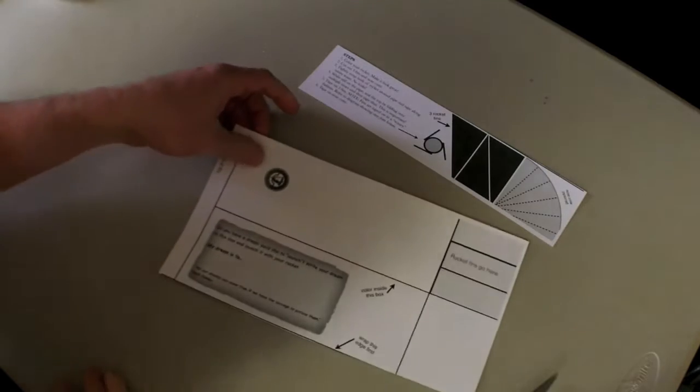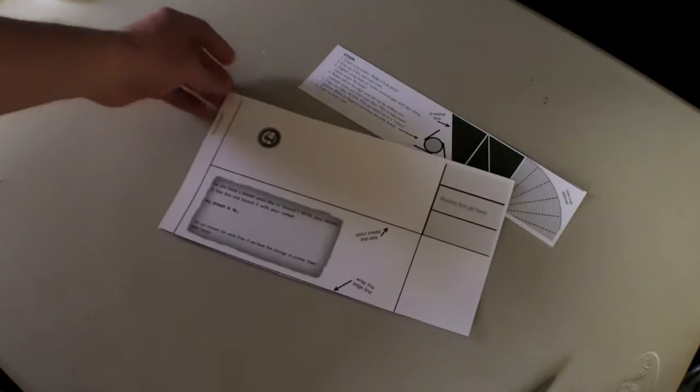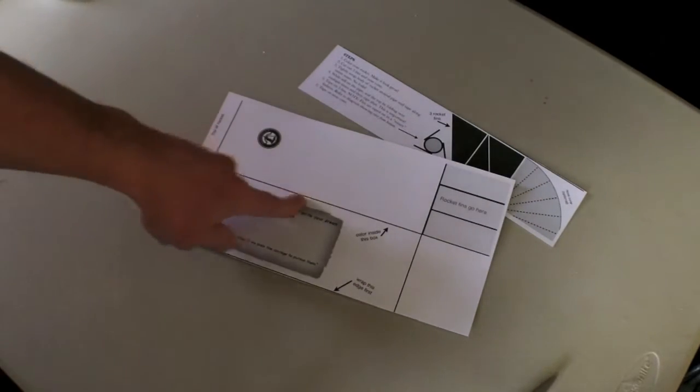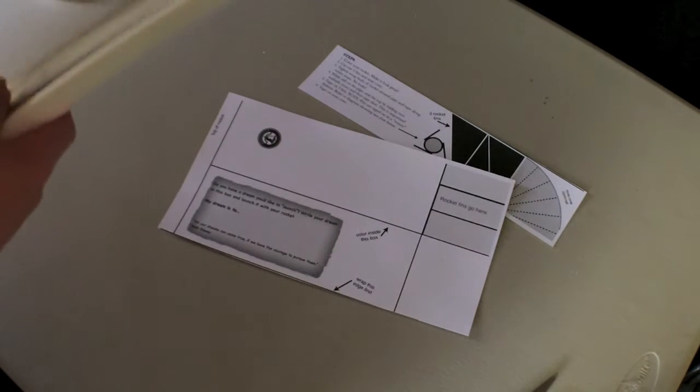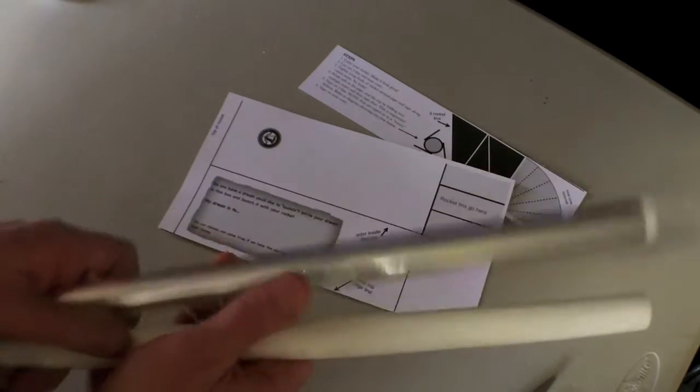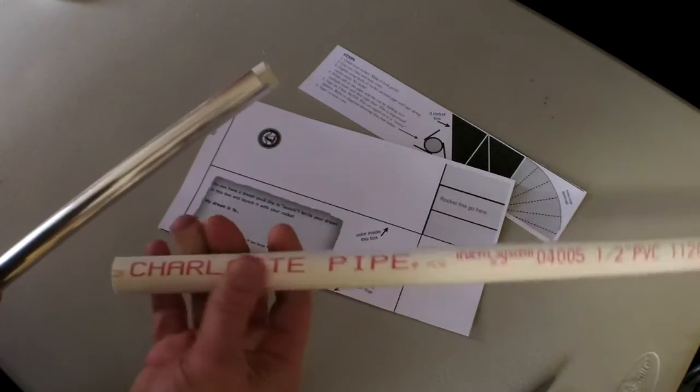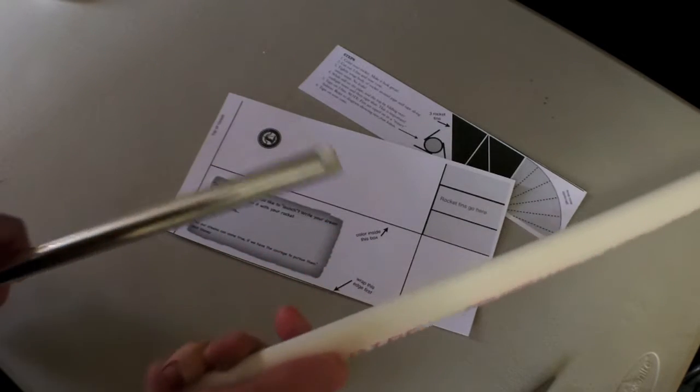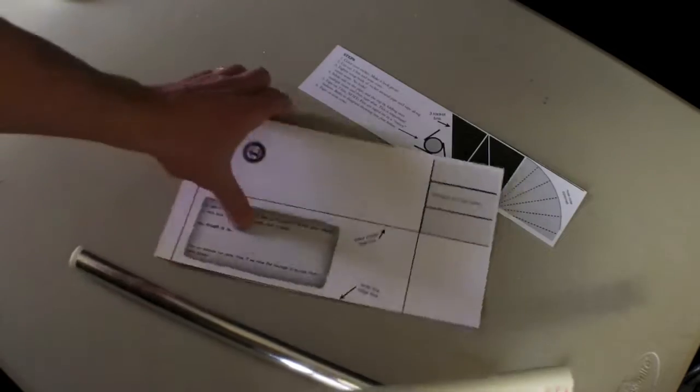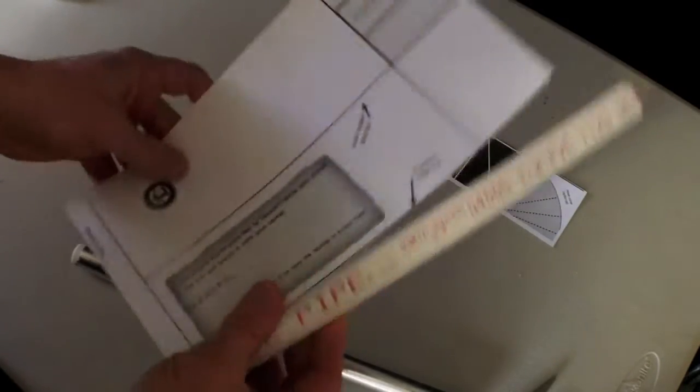The next step is to wrap this, what's going to be the fuselage, around a pipe, a half-inch PVC pipe. This is a piece of pipe, half-inch, and what I have learned is that if I simply wrap the cardstock around the pipe and then go to set the rocket on the launcher, it doesn't work well.